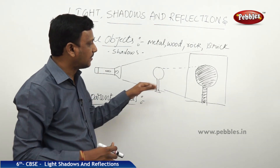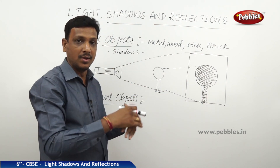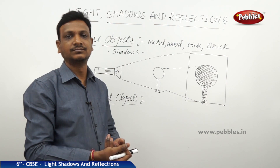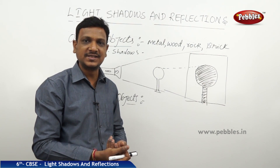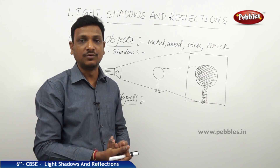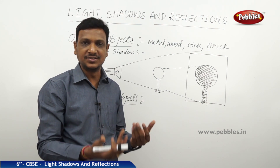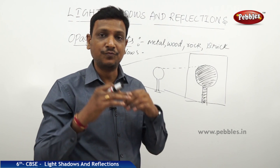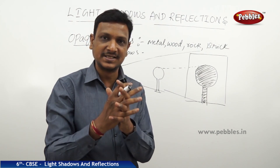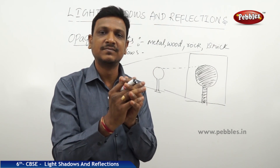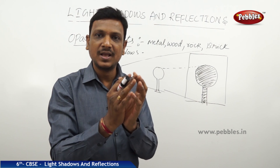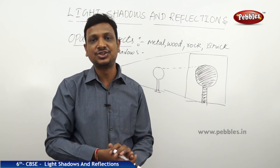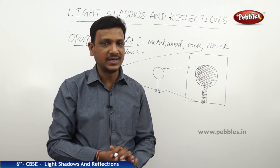Instead of an object, you can keep your hands in front of the torch to form so many shapes — birds, animals, trees, rabbit, human, baby. Have you ever seen shadow puppetry? You can browse it on YouTube. They make a beautiful story using shadows, light, and different hand and finger positions to cast shadows of different animals and figures.